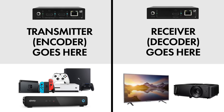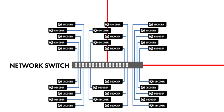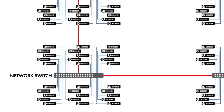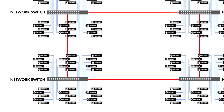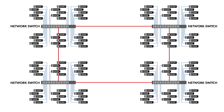Blu-ray players and game consoles use encoders, while TVs and projectors use decoders at the destination device. The encoders and decoders are all hooked up to gigabit Ethernet switches. As a result, we are no longer limited to a finite number of inputs and outputs — theoretically we could connect as many encoders and decoders as our network design allows.